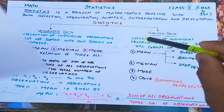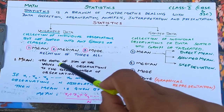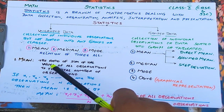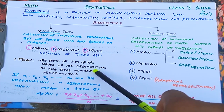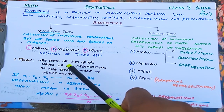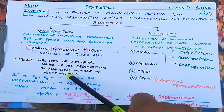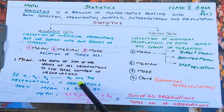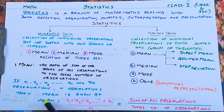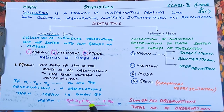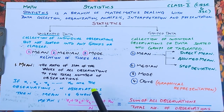Mean is the average value. It is the ratio of the sum of the values of all observations to the total number of observations. If x₁, x₂, x₃, ... xₙ are n observations, then mean equals x₁ plus x₂ plus x₃ plus ... plus xₙ divided by n — sum of all observations divided by total number of observations.